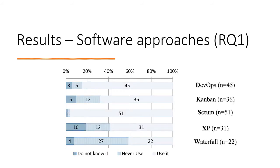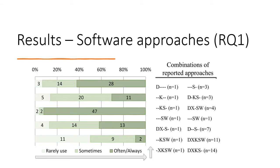For Results, Research Question 1: What are the effort estimation techniques used in agile software development? To understand estimation technique usage, we first examined development approaches. It was found that most respondents use Scrum, followed by DevOps, Kanban, Extreme Programming, and the least used was the Waterfall model. Although Scrum and Kanban are the most frequently practiced, many combinations are reported. Most participants reported using the DXKS combination — DevOps, Extreme Programming, Kanban, Scrum — used by 14 respondents, followed by DXKSW — adding Waterfall — used by 11.